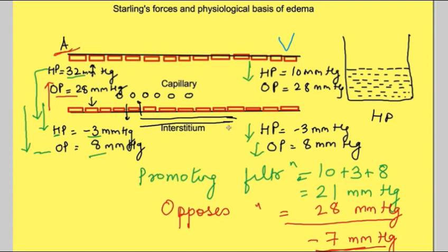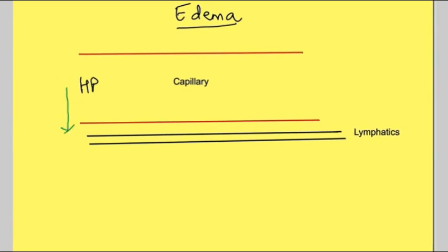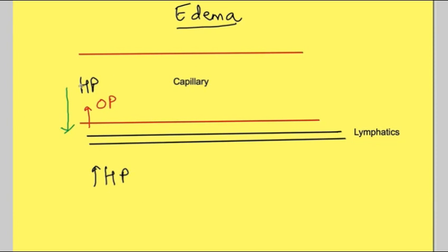When can fluid accumulate inside the interstitial space? That extra fluid accumulation is known as edema. If hydrostatic pressure increases too much, the balance of forces shifts towards filtration and the lymphatics may not be able to carry the excess filtered water — leading to edema. Increased hydrostatic pressure will therefore lead to edema.